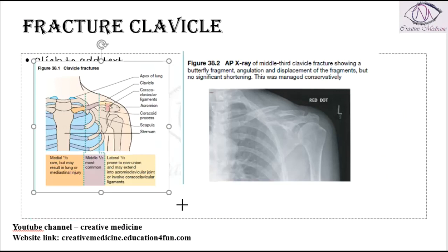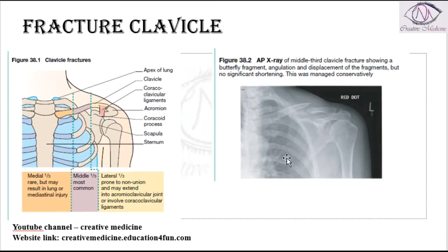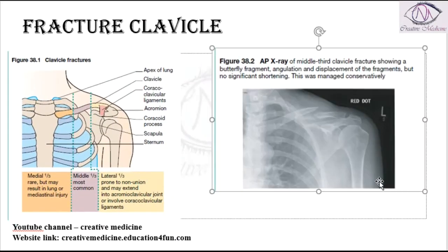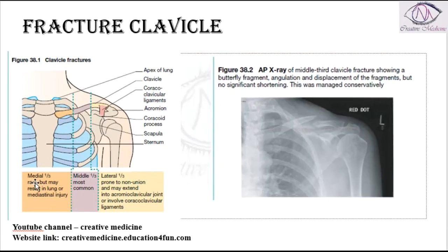In the clavicle, fracture of the medial one-third is rare. However, when it does occur, it can result in injury to the lung and the mediastinum, because the medial one-third is in close proximity to both structures.